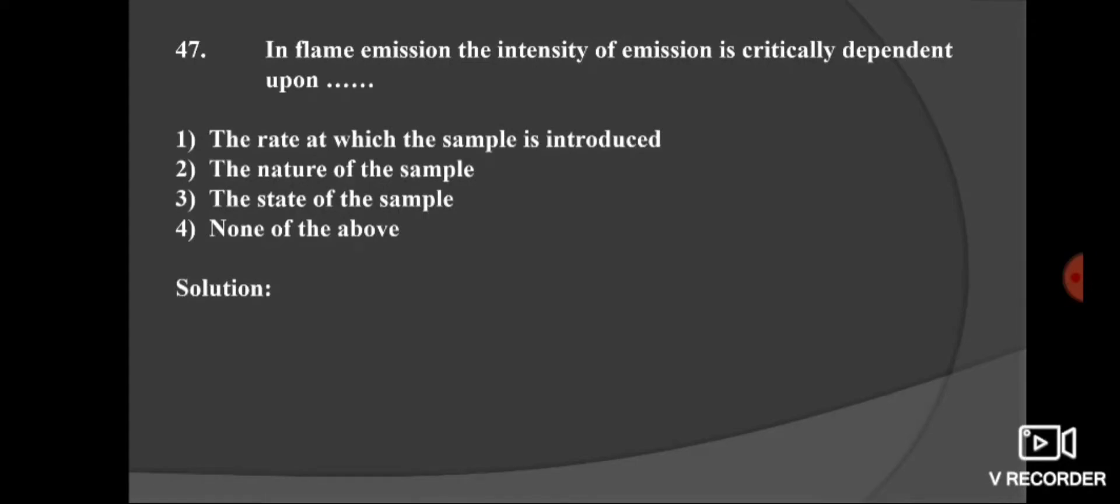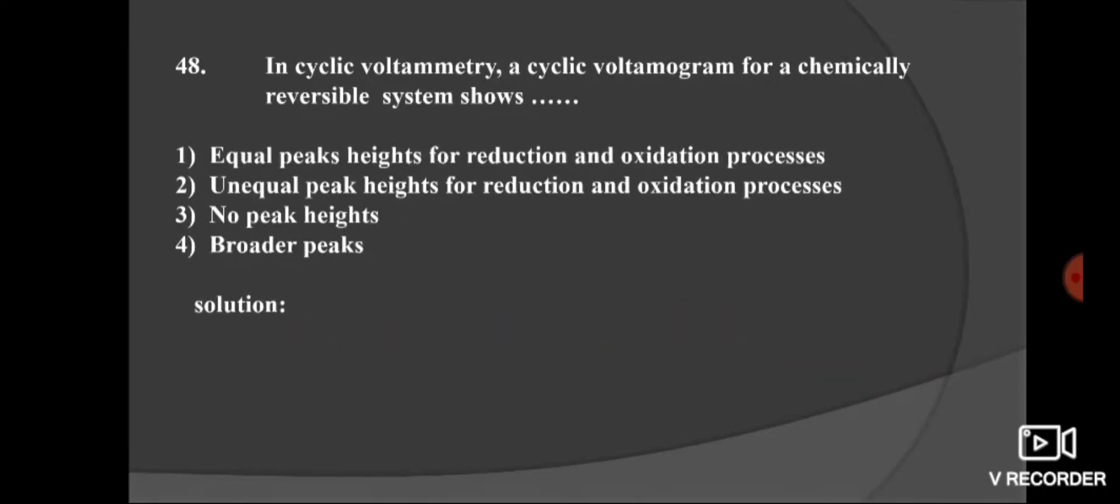Next question. In flame emission, the intensity of emission critically depends upon: option 1, the rate at which sample is introduced; option 2, the nature of the sample; option 3, the state of sample; and 4, none of the above. Here in flame emission, the intensity of emission is critically dependent on the rate at which sample is introduced. Option 1 is the right option.